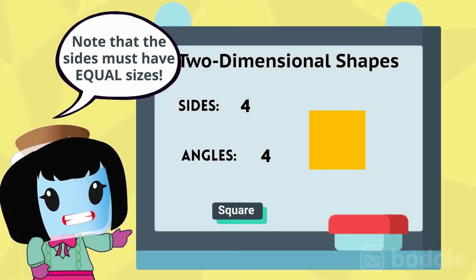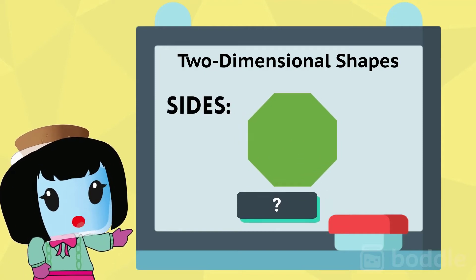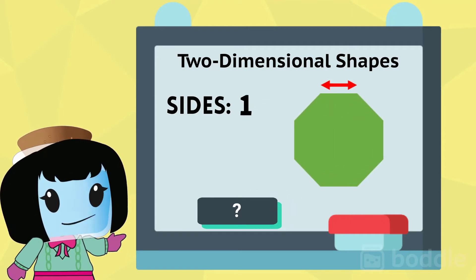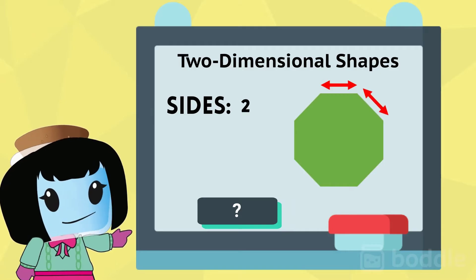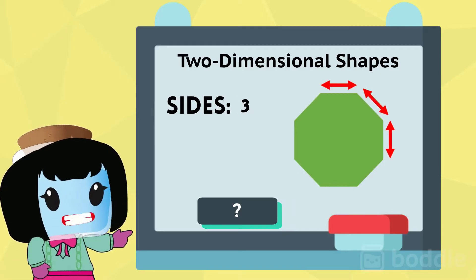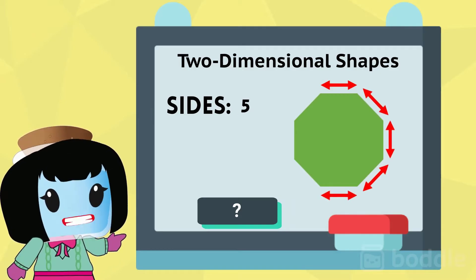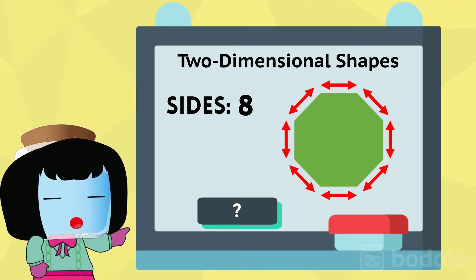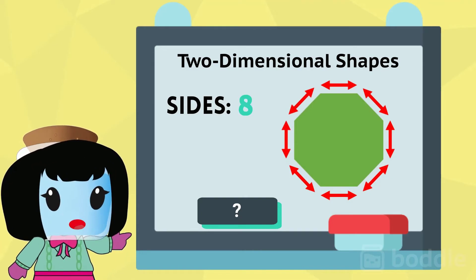What about this shape? How many sides does it have? One, two, three, four, five, six, seven, eight. It has eight sides.